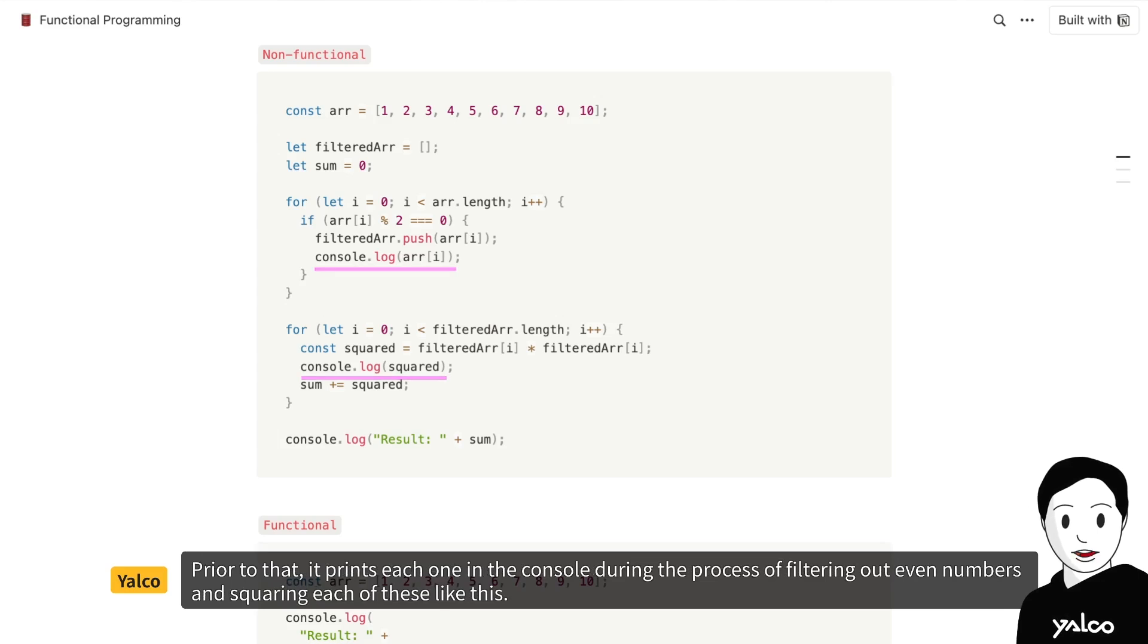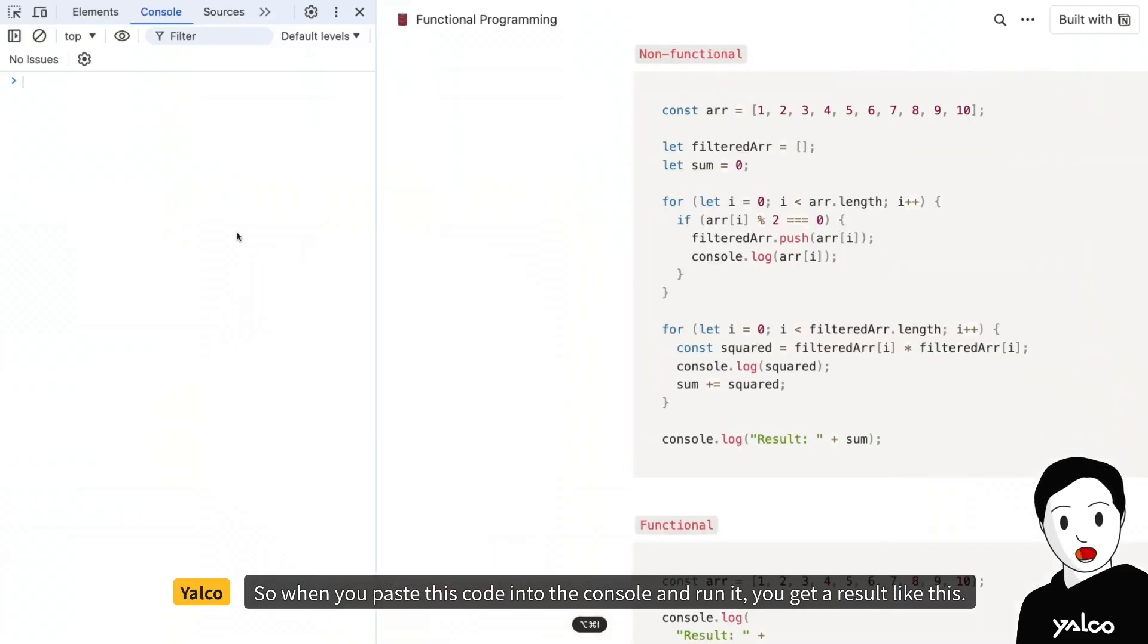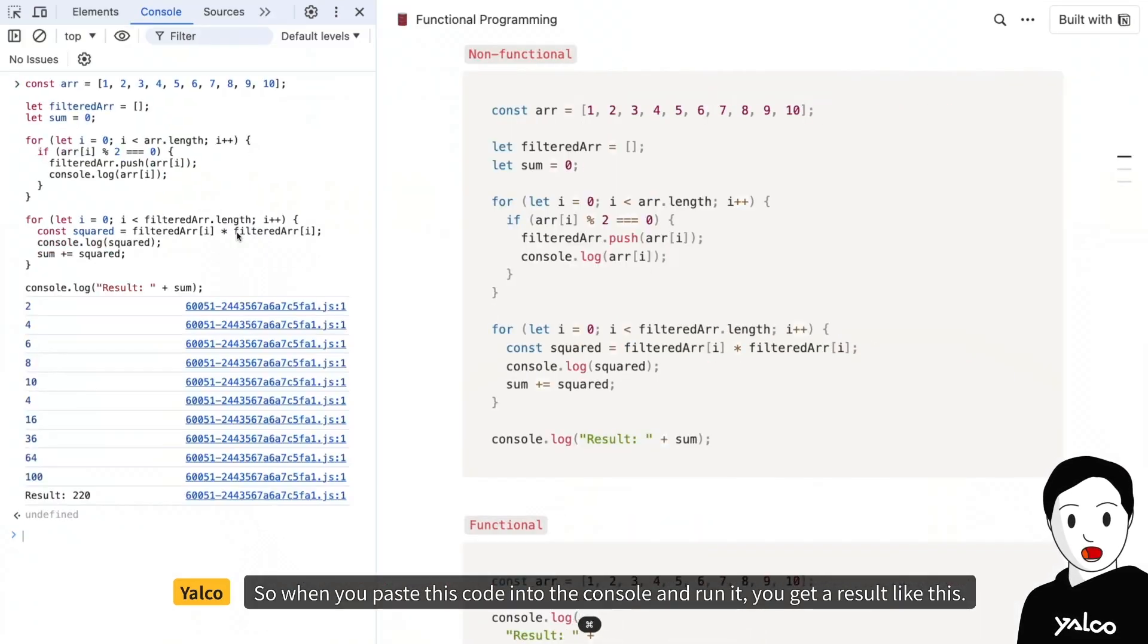Prior to that, it prints each one in the console during the process of filtering out even numbers and squaring each of them like this. So when you paste this code into the console and run it, you get a result like this.